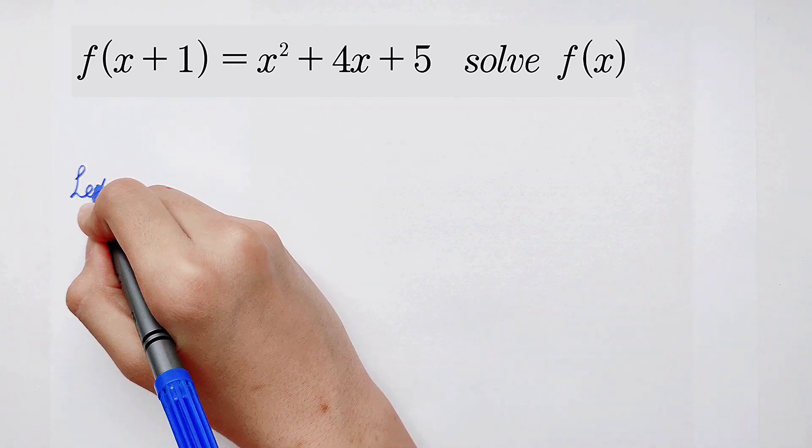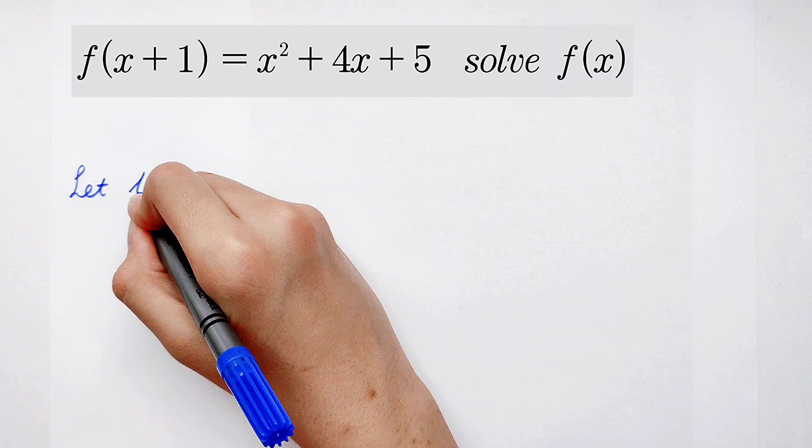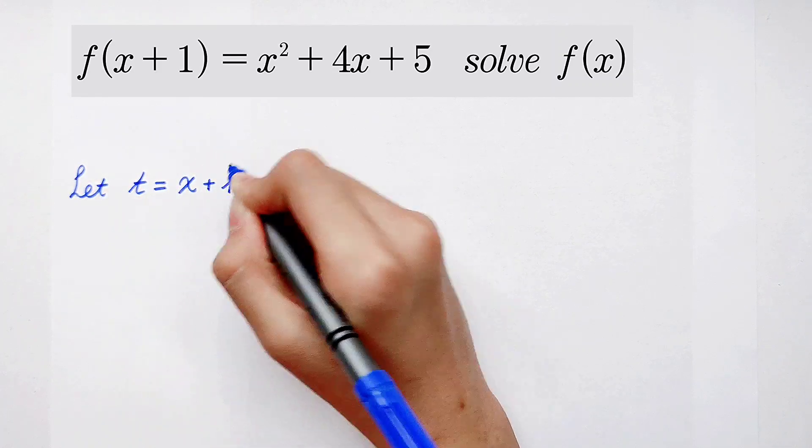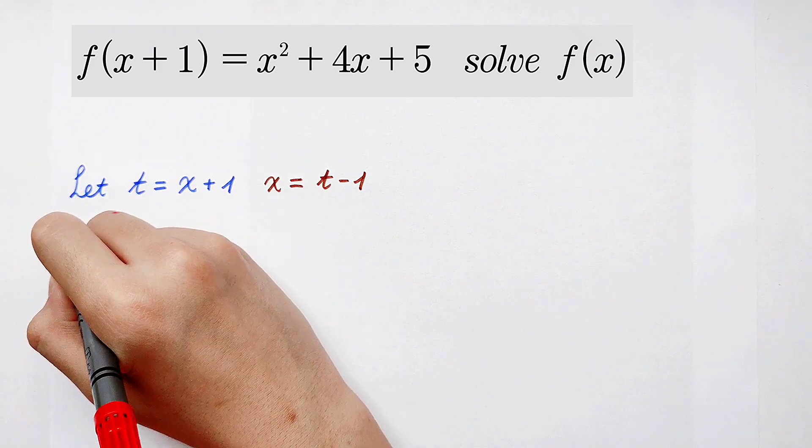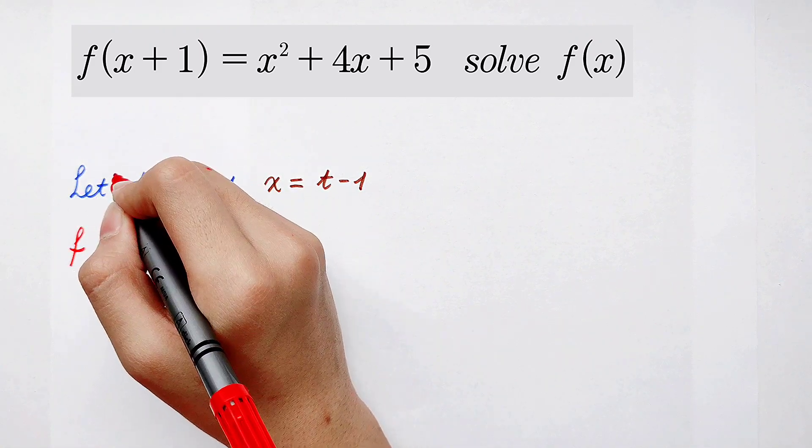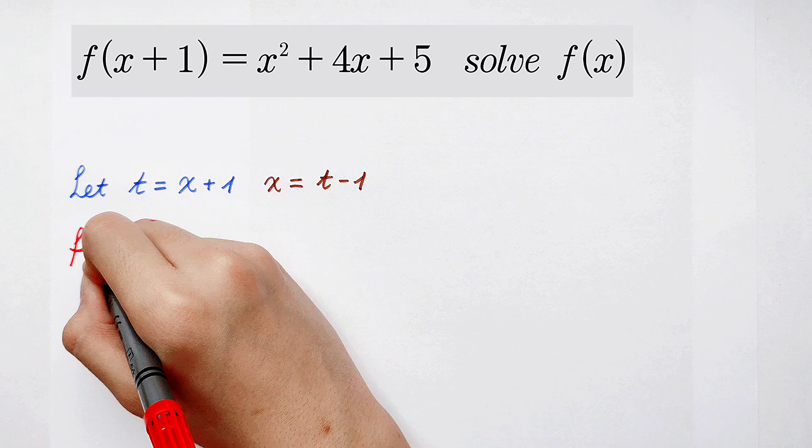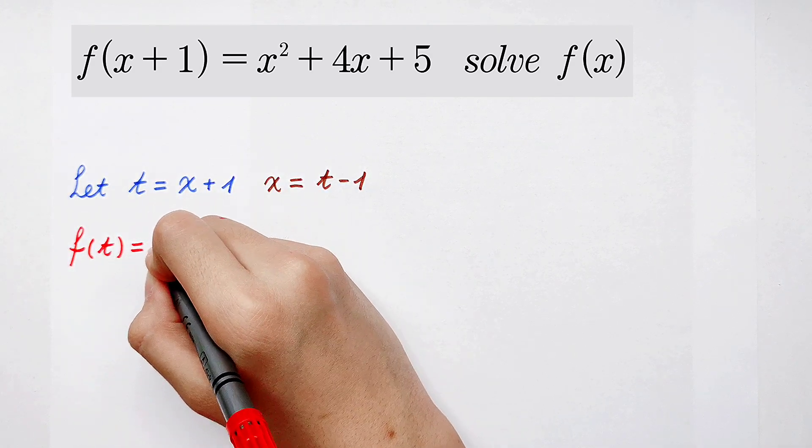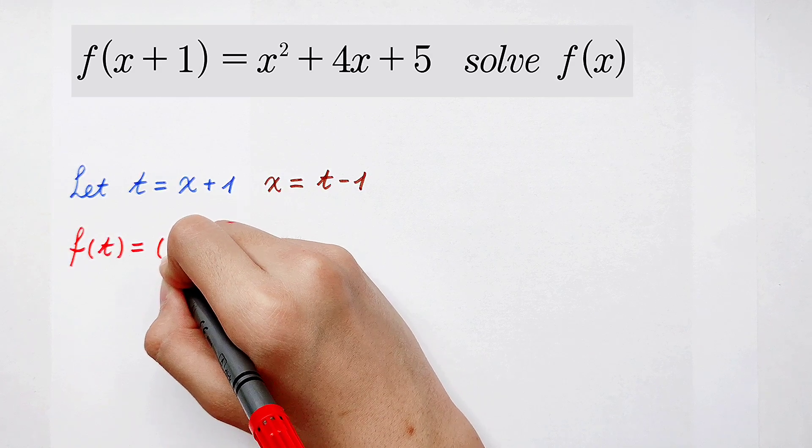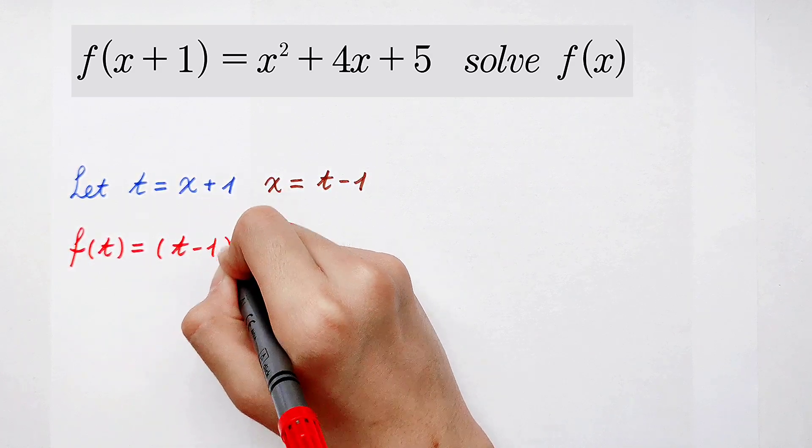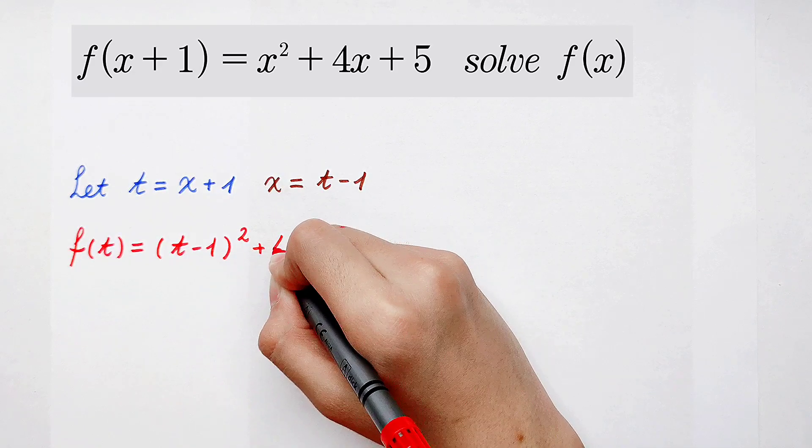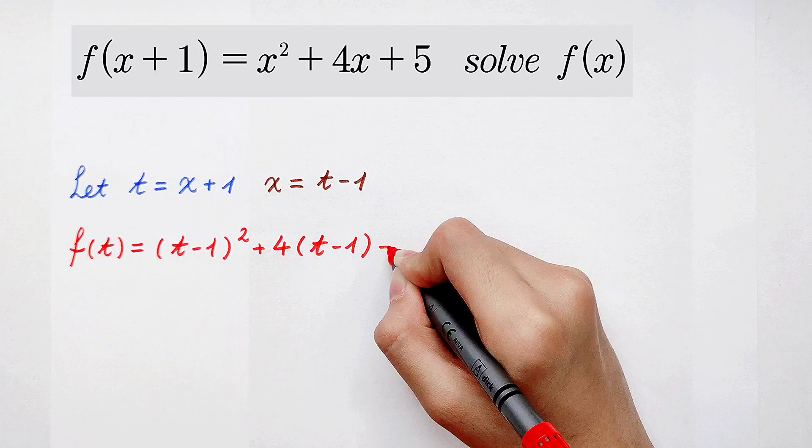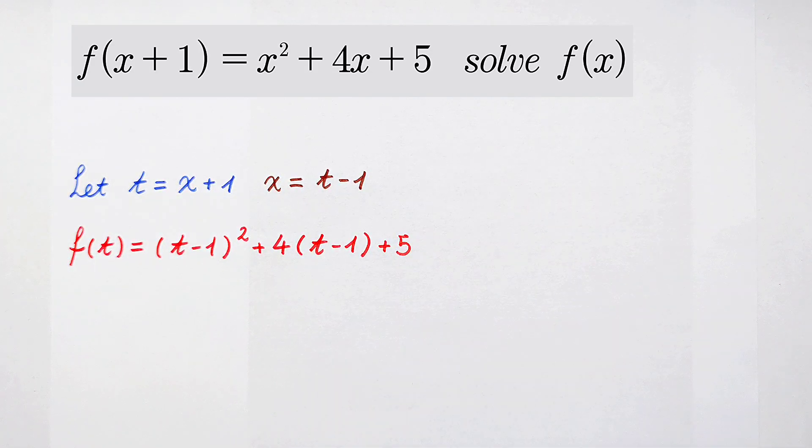Now we can let t to be x plus 1. So here it becomes f of t and equals, x is t minus 1. So it's t minus 1 squared, and then plus 4 times x is t minus 1, and then plus 5. Awesome.